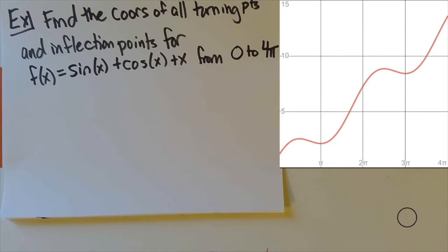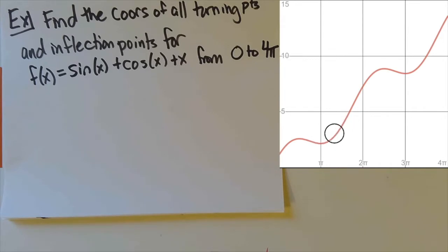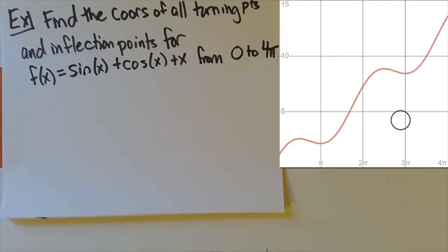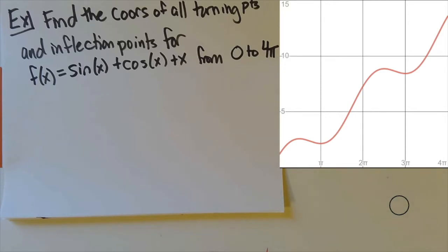Inflection points are a little trickier to see in this graph, but I can definitely tell it's concave down here and concave up here, so there's definitely an inflection point somewhere in here. Then concave up and then concave down, so there's another one in there. Then it's concave up again, so there's another one somewhere. I can't quite tell if it's turned all the way back to concave down by the end — so that's one, two, three, and maybe a fourth over here we can't quite tell. Let's make sure we get that when we do this algebraically.